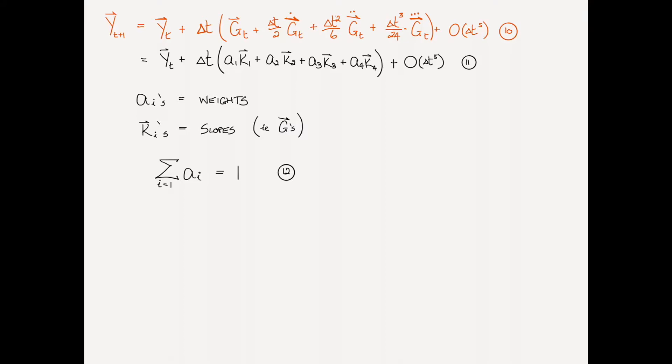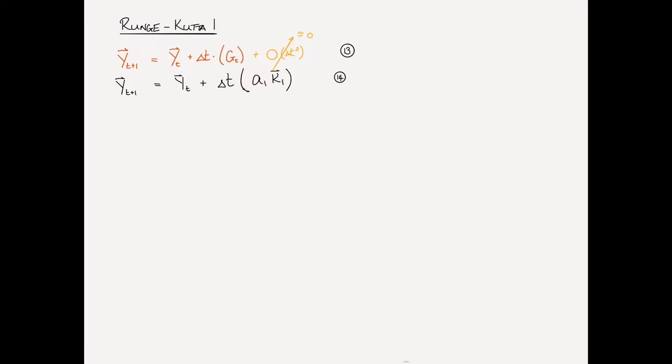Examining first the case of the Runge-Kutta first stage, or one stage, stage one integrator, this is actually something we've seen before, but I just wanted to show you so you get the feel for what we're doing here. In this case, we decide that all the terms of order delta t squared, the second order terms and higher, are negligible.